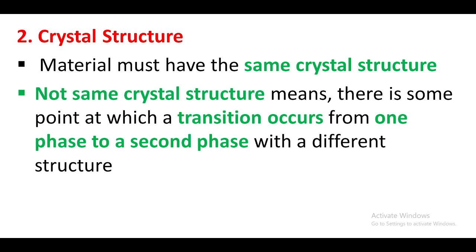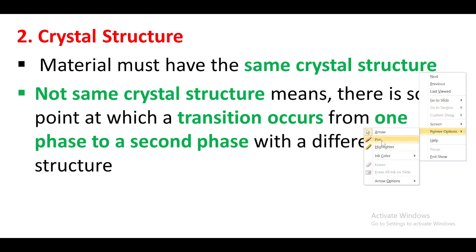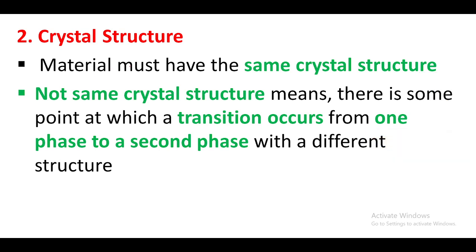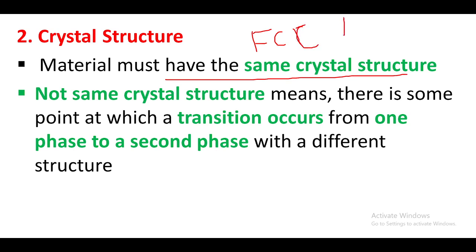The second rule is crystal structure. The materials must have the same crystal structure. For example, nickel and copper both have an FCC — face-centered cubic — structure. Because they share the same crystal structure, they can be mixed without problem.